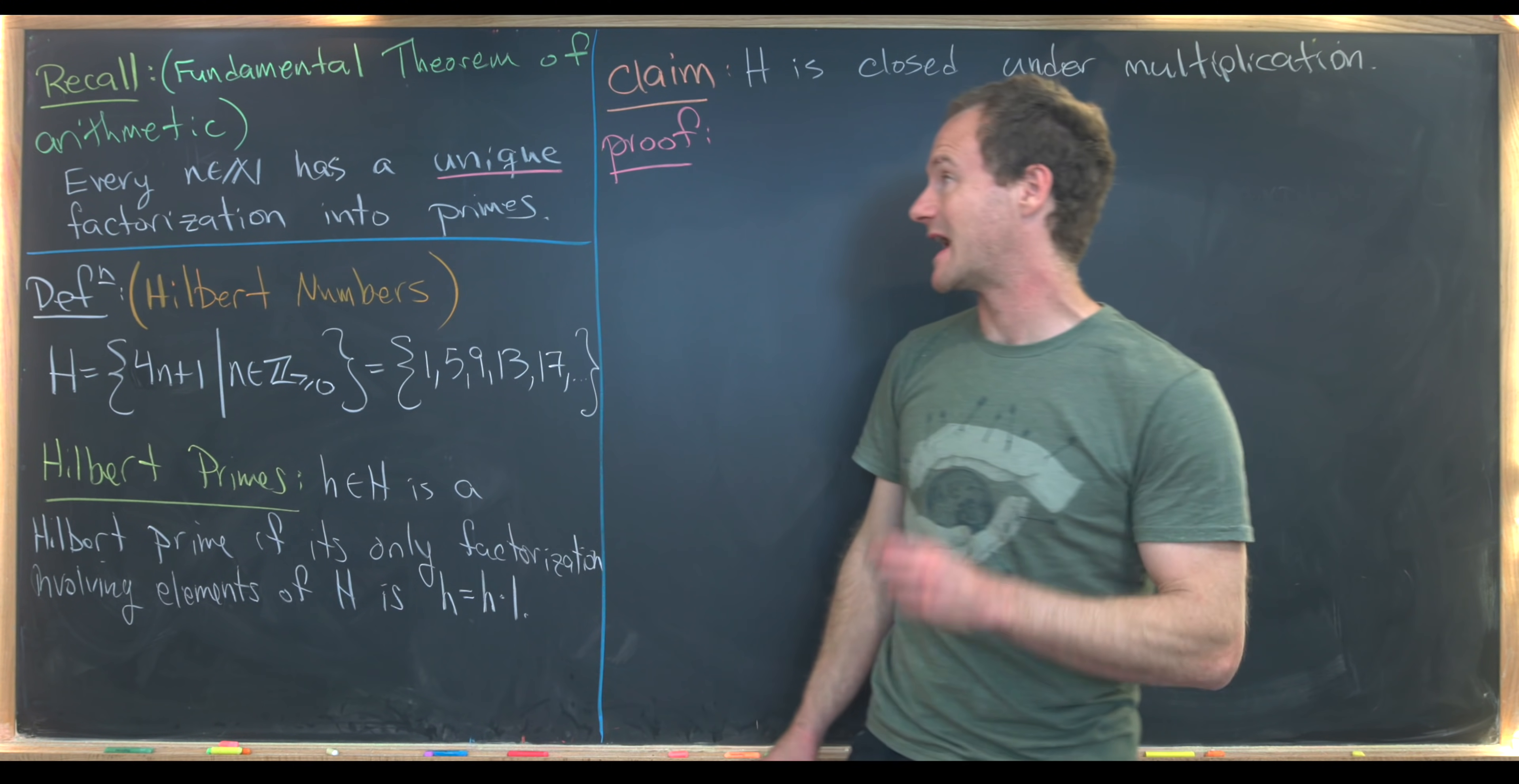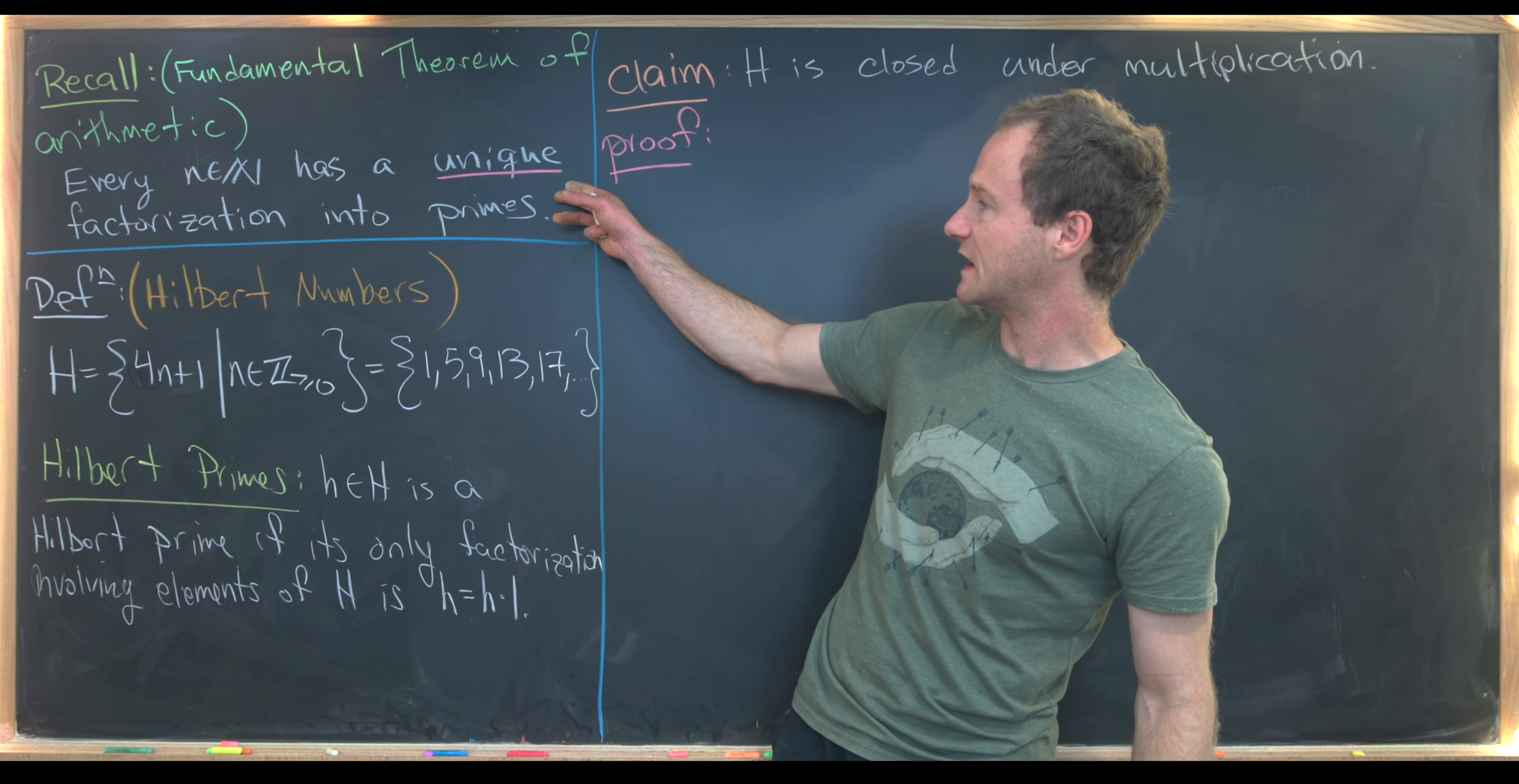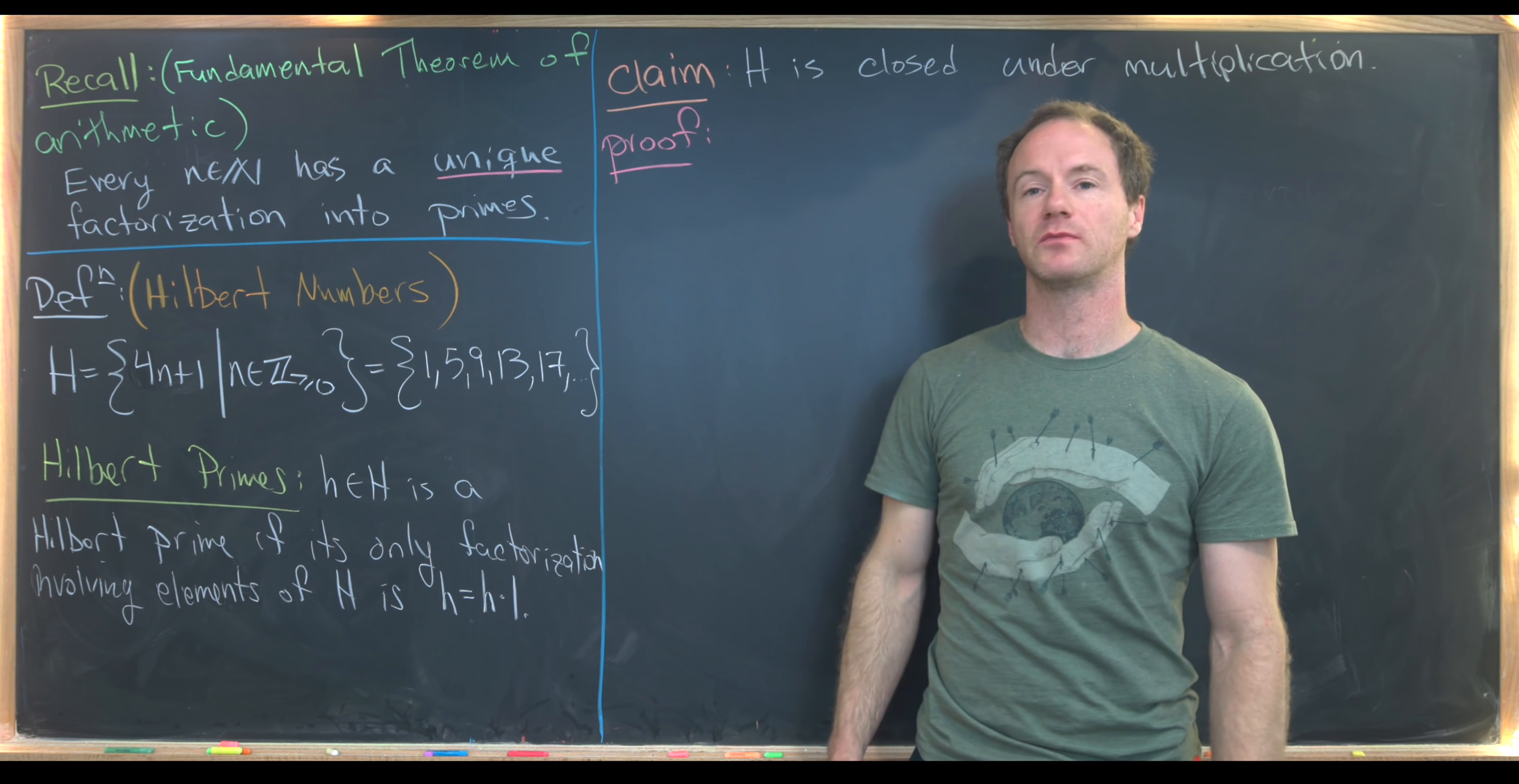let's recall the fundamental theorem of arithmetic. That says that every natural number has a unique factorization into primes. Well, really it's only unique up to permutation of the primes. So obviously we can write 6 as 2 times 3 or 3 times 2. Those are considered to be the same factorization. So there are two things here: one is that it has a factorization into primes, and another thing is that factorization is unique. Now that we've got this recalled, let's see what Hilbert numbers are.